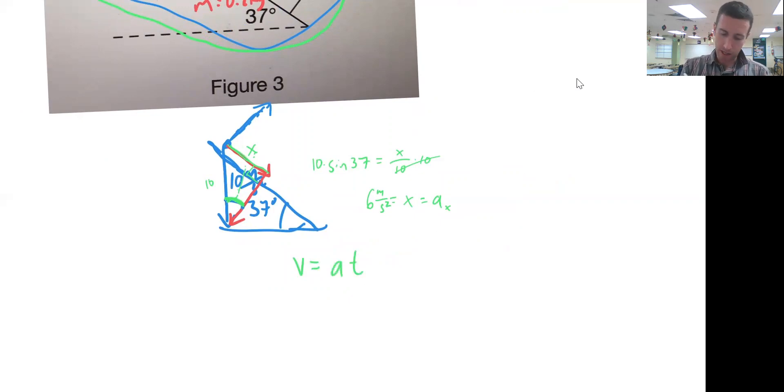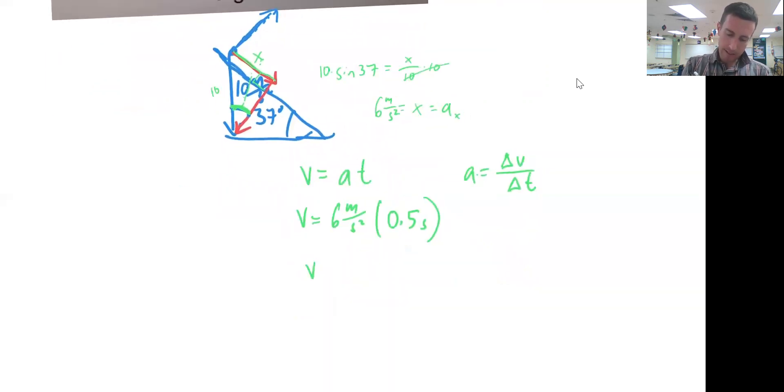Velocity equals 6 meters per second squared times 0.5 seconds—6 times a half—velocity of the center of mass is equal to 3 meters per second.